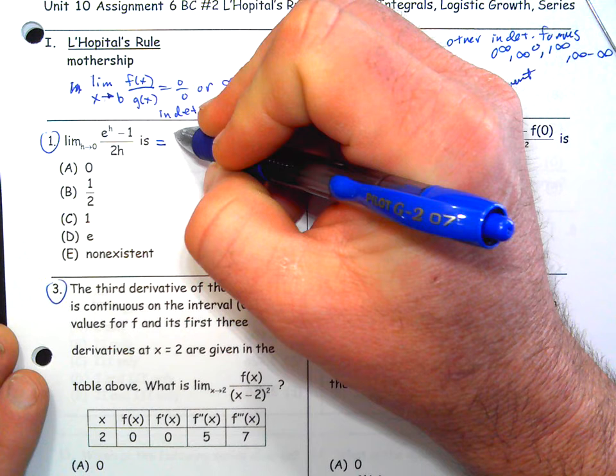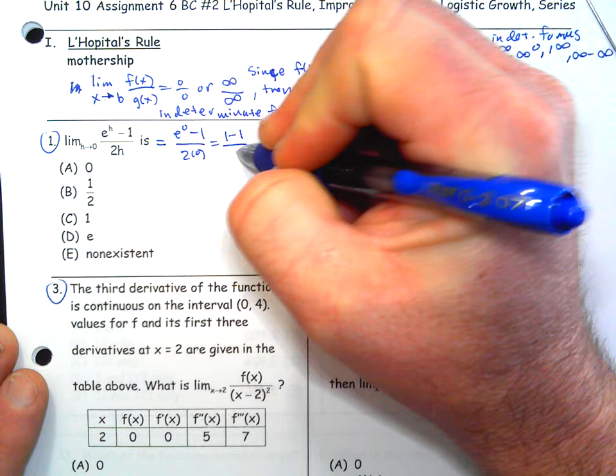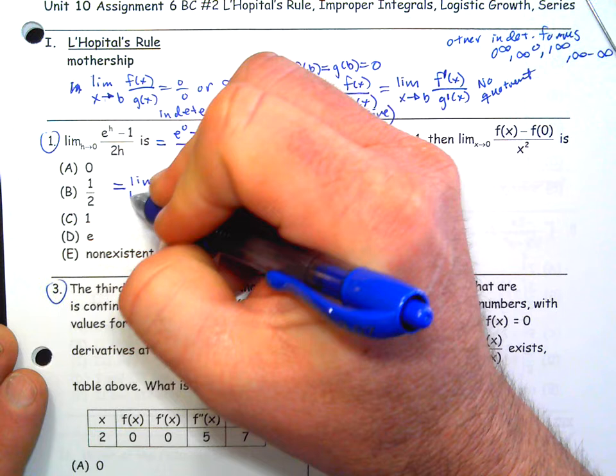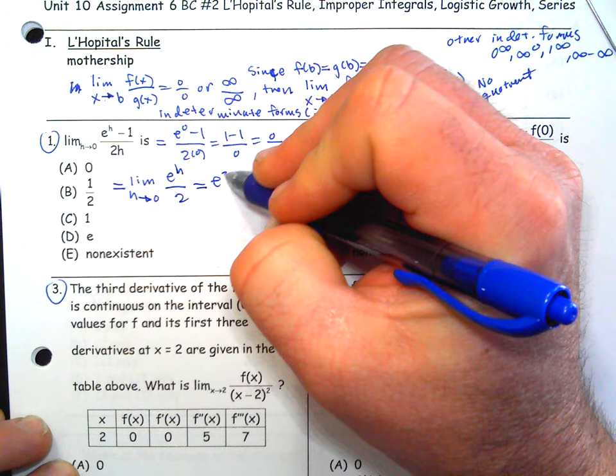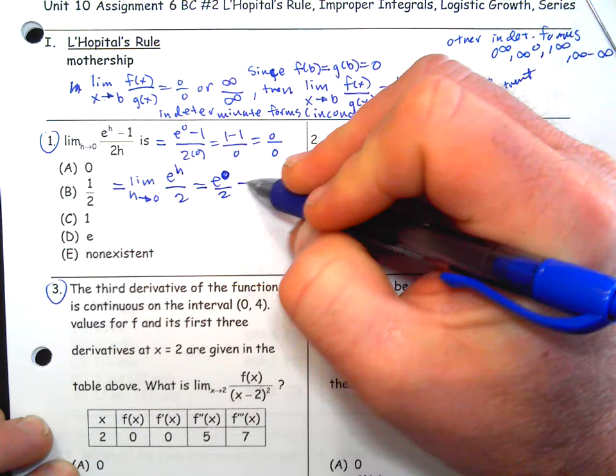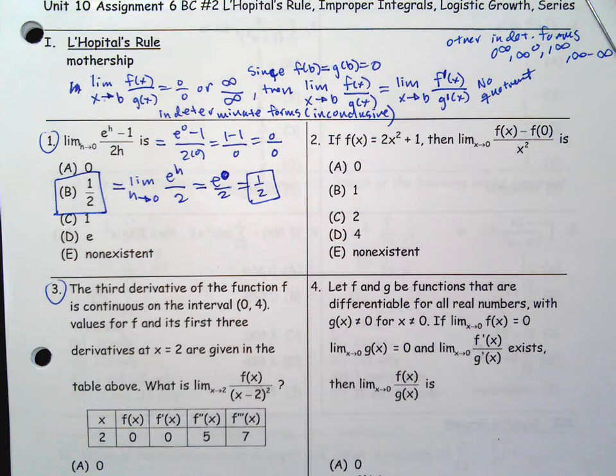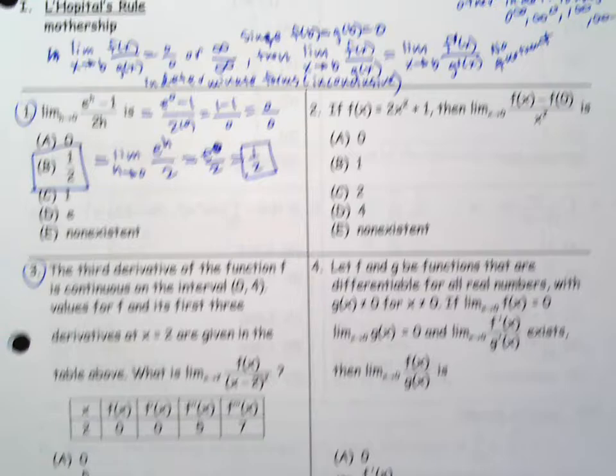First step is we just plug h equals 0 in, and we get e to the 0 minus 1 over 2 times 0, which is 1 minus 1, giving you 0 over 0. So we're going to say that this limit equals the limit as h goes to 0 of the derivative of the top. We're taking the derivative with respect to h, so it's going to be e to the h over 2. Then e to the 0 over 2 when we plug 0 in gives you 1/2. Kind of a straightforward L'Hôpital's Rule.